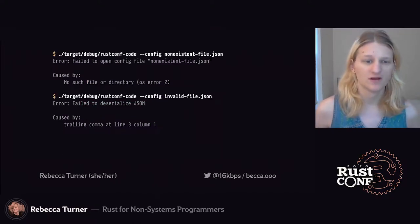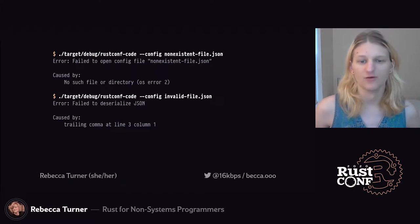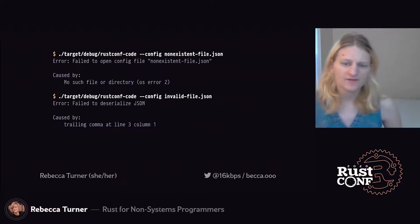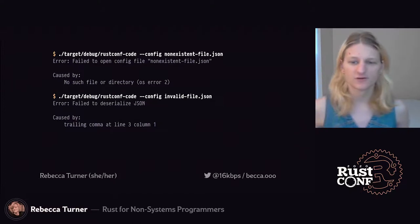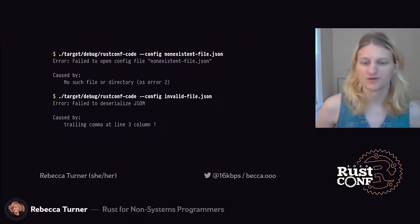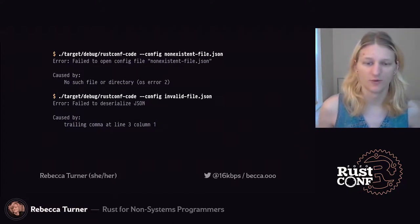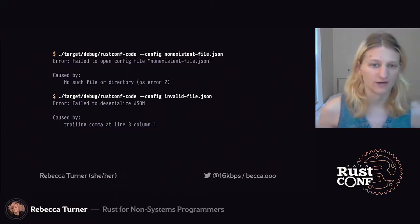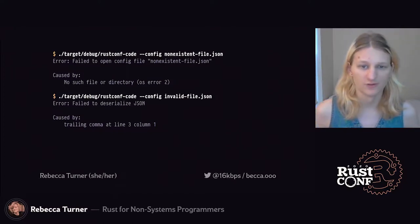Here, we can try to use a non-existent file or an invalid one as our config, and we can see the error messages we get. These are pretty simple on their own, but they're especially useful when we have a bunch of layers of error context to figure out what we did wrong. And unlike exceptions in a lot of languages, we don't just get an enormous unreadable stack trace by default.